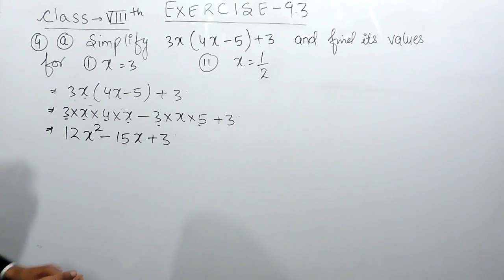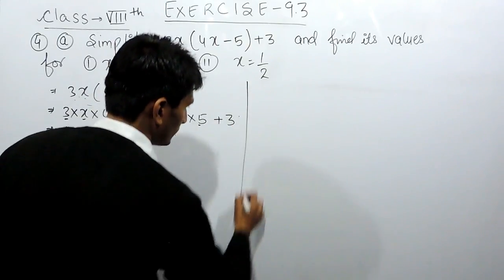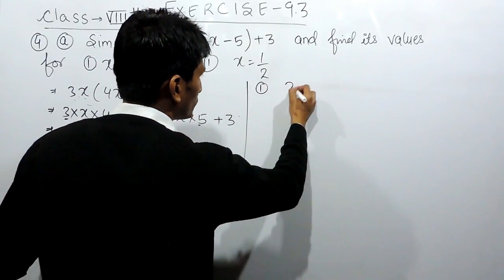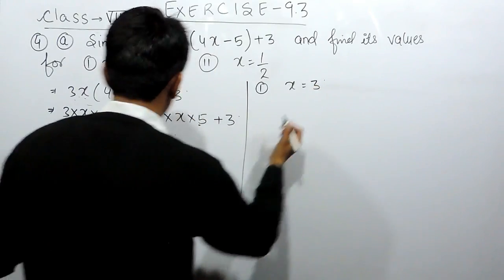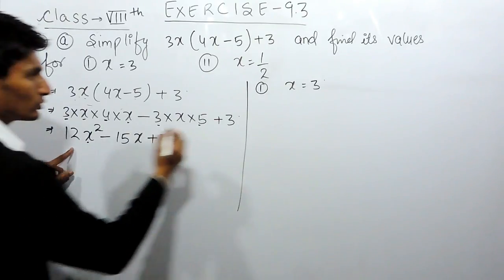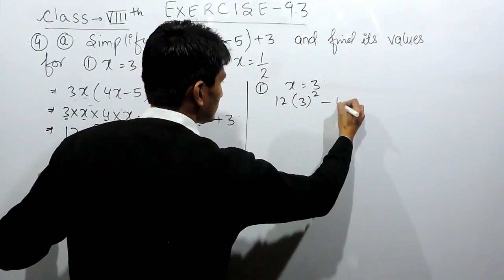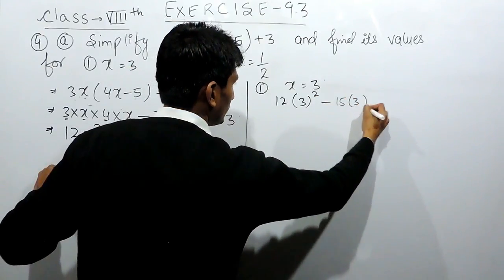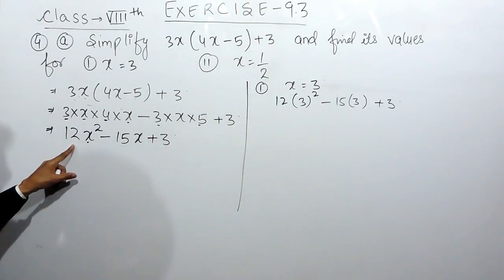Now, you have to find the value when x is 3, which means in the first case, you have to substitute the value of x as 3. Obviously, instead of x, we can write 3. This will be 12 multiplied by 3 squared minus 15 into 3 and this is plus 3. These will be the values.